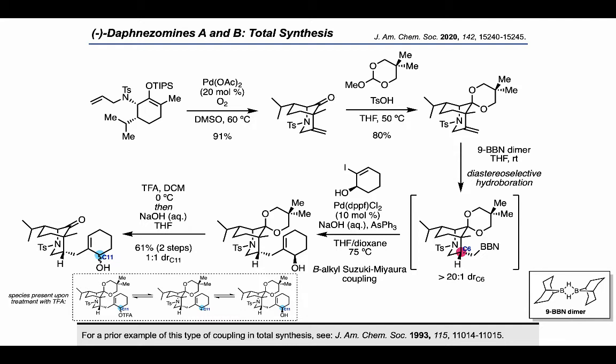Hydrolysis of that TFA ester led to the regeneration of the allylic alcohol motif upon treatment with sodium hydroxide. While they initially got this sequence to work starting from an enantiopure iodocyclohexene allylic alcohol, they showed that starting from a racemic allylic alcohol provided similar results.